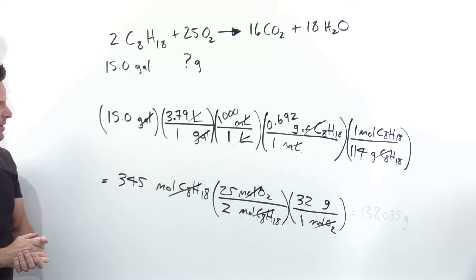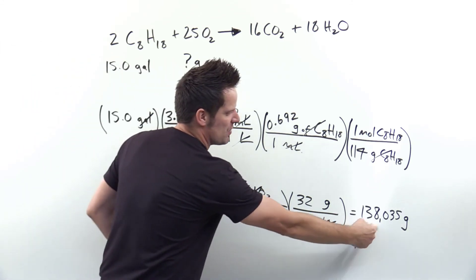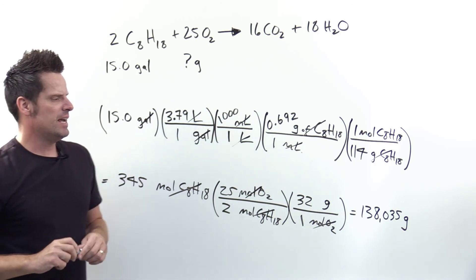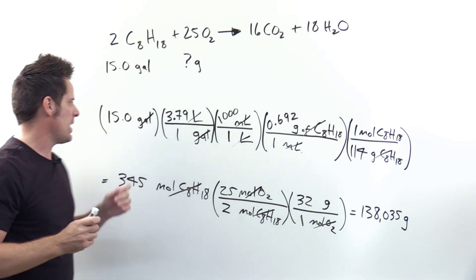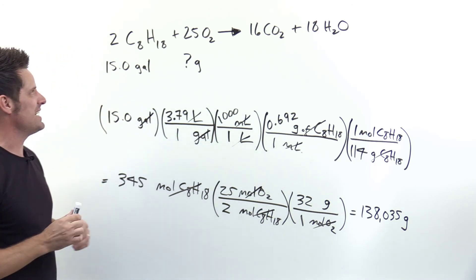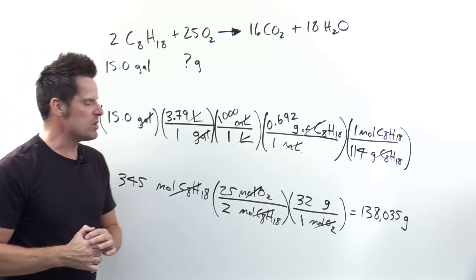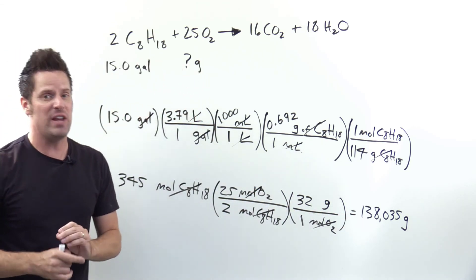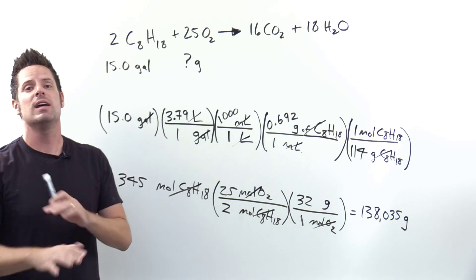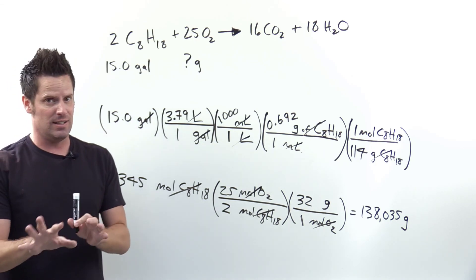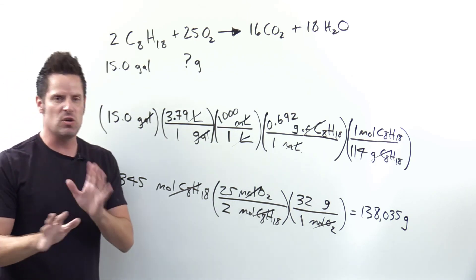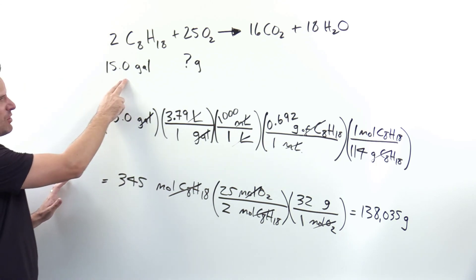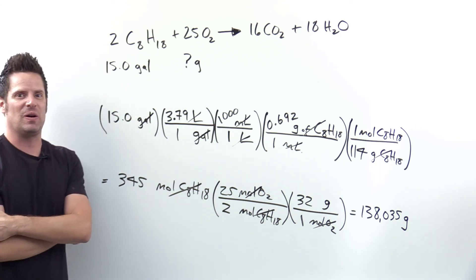Punching all of that into my calculator, I get a final answer of 138,035 grams of O2 — it takes a lot of O2 to react with 15 gallons of octane. You can rewrite this with the proper number of significant figures and in scientific notation at your discretion. The main point is to show the process of converting from gallons of one substance all the way to grams of another.